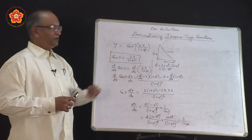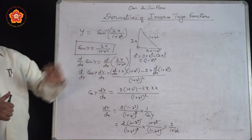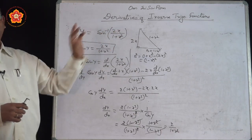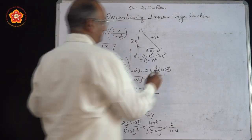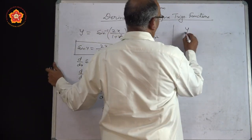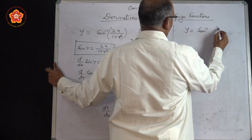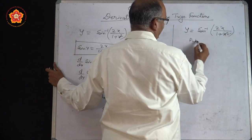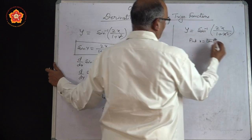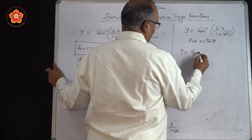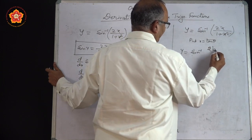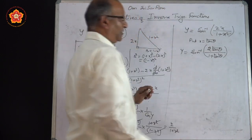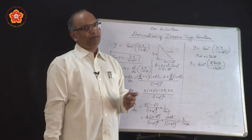This is our question. Now, just imagine if x is replaced by tan θ — what will happen? You will have 2 tan θ upon 1 + tan² θ. We write y = sin⁻¹(2x/(1+x²)) and substitute x = tan θ. The problem becomes y = sin⁻¹(2 tan θ/(1 + tan² θ)). And 2 tan θ/(1 + tan² θ) is nothing but sin 2θ.